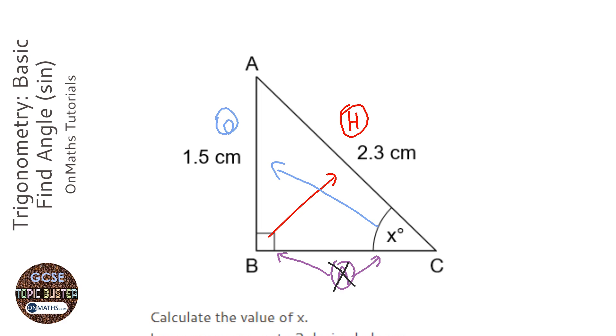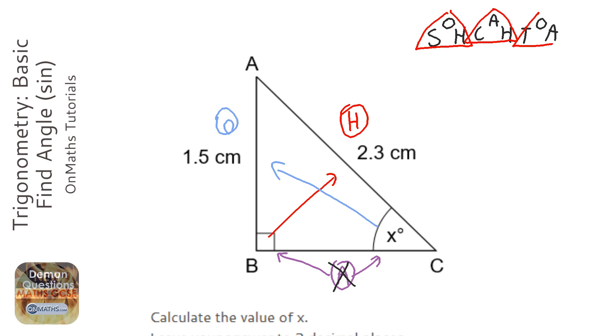OK, next step is you write down the glorious SOHCAHTOA. This is one that you must remember. And these are just a collection of three triangles. We've got the SOH triangle, the CAH triangle, and the TOA triangle.